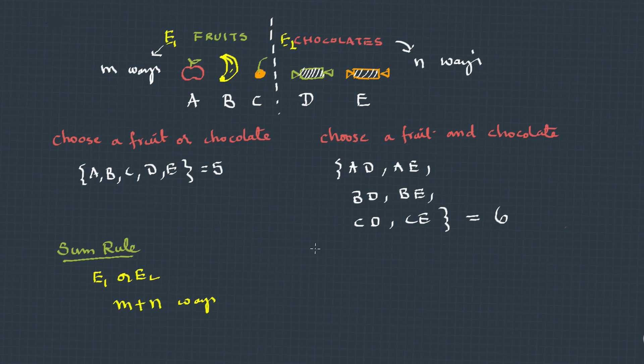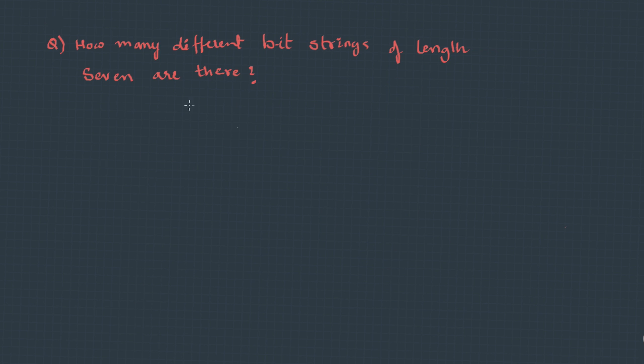And if I have to perform event one and event two together, we'll be using the product rule which says that event one and event two together can be done in m into n ways. The sum rule stresses on 'or' and the product rule stresses on 'and'.